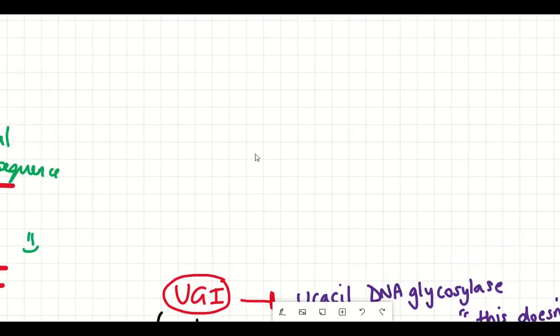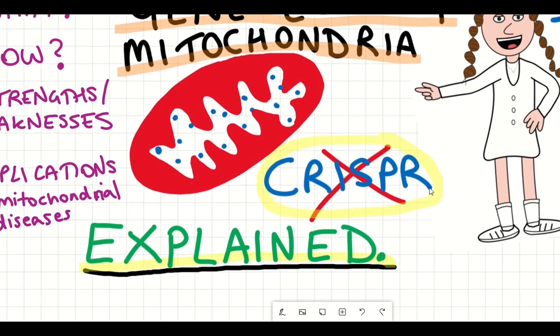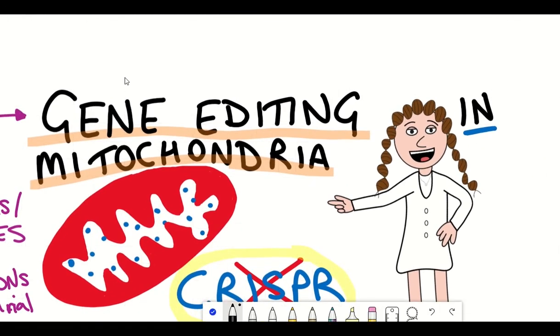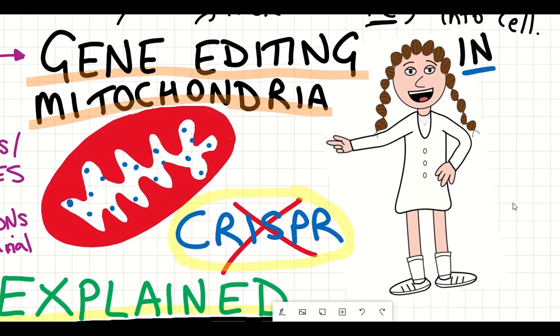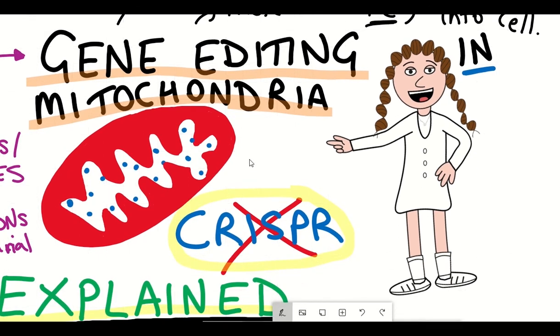However, it goes without saying there are still areas of improvement such as trying to further increase the efficiency and maybe seeing if they can edit cytosine residues that aren't just preceded by thymine. And if it was ever going to be used in treatments, developing a way to actually get the system into a cell, so delivery of the system is also something that would need to be worked on. But that kind of goes without saying for any of these gene editing systems at the moment.